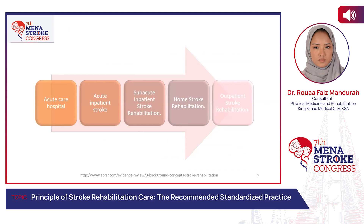In terms of the rehabilitation pathway, the patient will initially receive rehabilitation in the acute care hospital or acute inpatient stroke unit, then be transferred to acute inpatient stroke rehabilitation, ideally followed by home stroke rehabilitation, and eventually outpatient stroke rehabilitation. According to severity, some patients may only receive rehab in acute inpatient stroke then discharge — if mild, followed by outpatient. Patients between mild and moderate receive sub-acute inpatient, and severe patients may receive home stroke rehabilitation or alternative level of care.